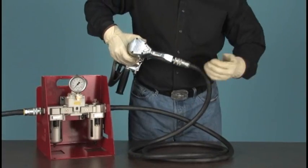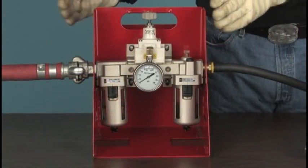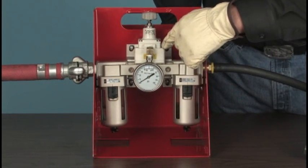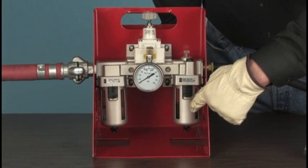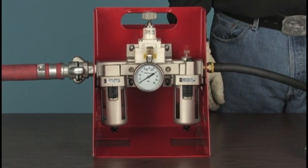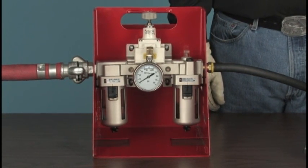The air control assembly, or FRL, consists of a filter, a pressure regulator, and a lubricator. Do not operate the J-Gun without this FRL unit in the airline as serious damage to the tool will result.